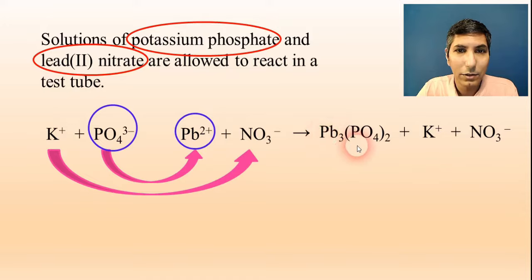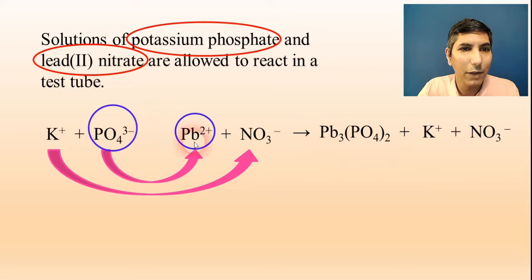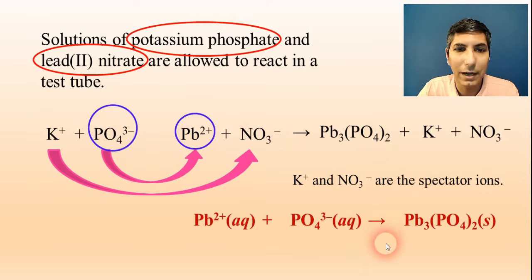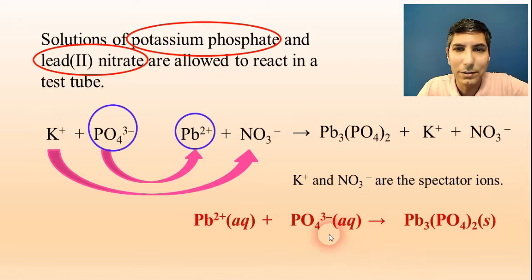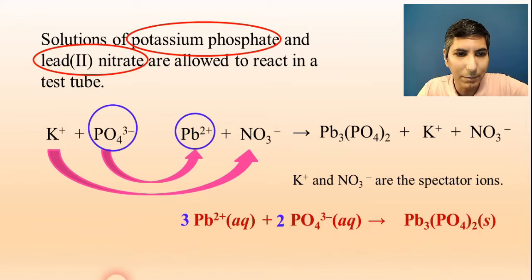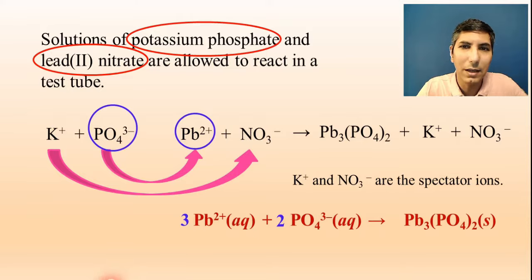We're going to make lead(II) phosphate. When you write the net ionic equation, we have Pb²+ plus PO₄³⁻ yields lead(II) phosphate. There's our net ionic equation. One little detail: notice this is not a balanced equation. You want to balance that equation, so we have three lead atoms and two phosphate ions on both sides of the arrow. That's generally speaking how we write net ionic equations.